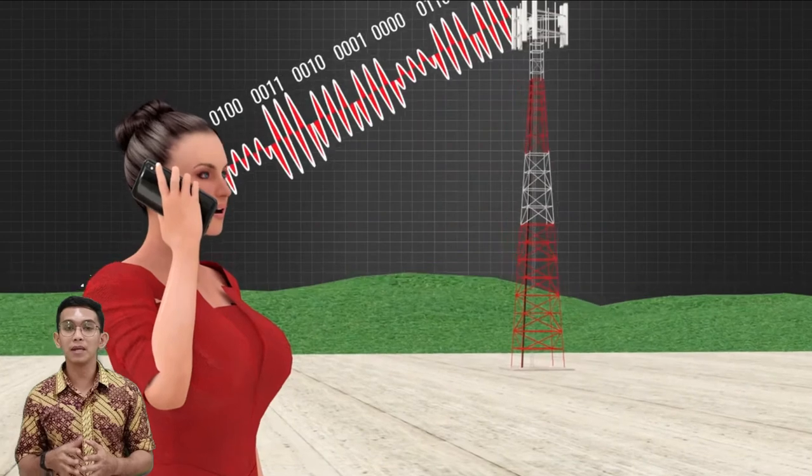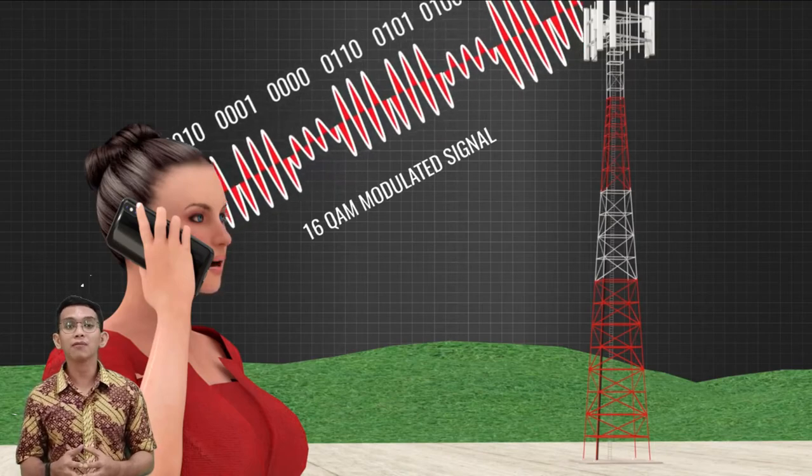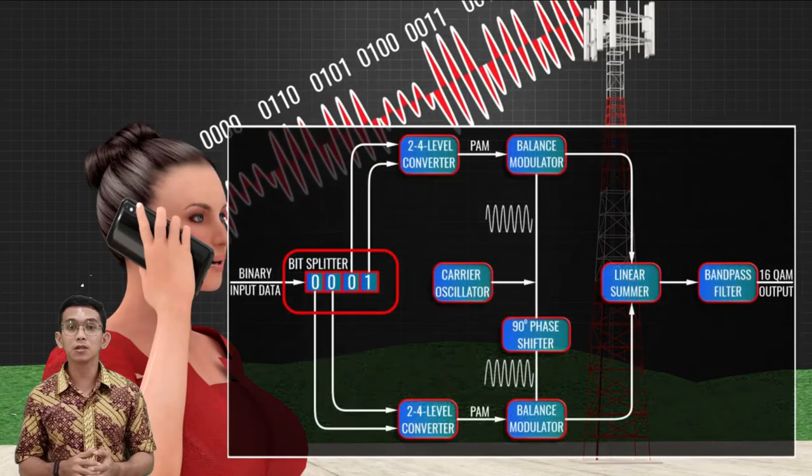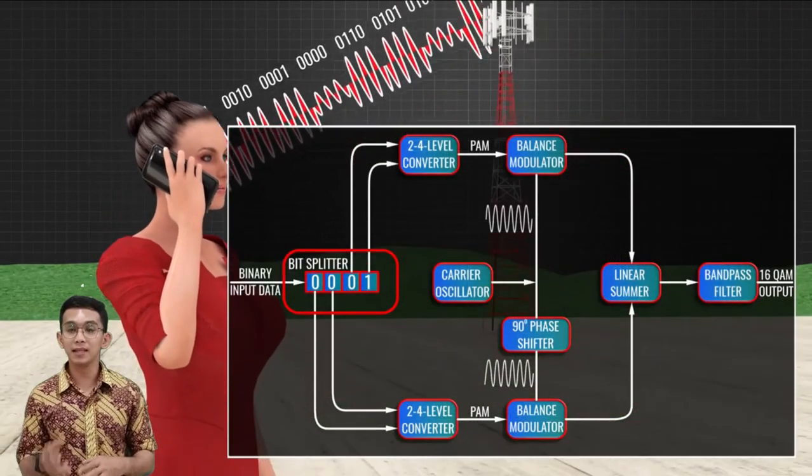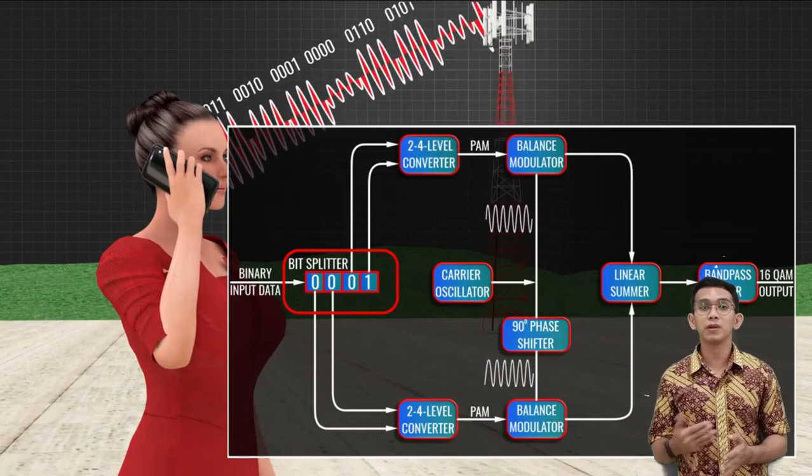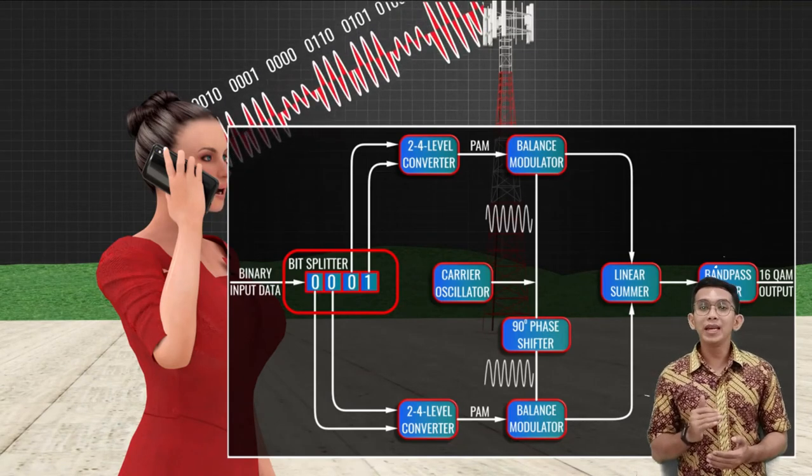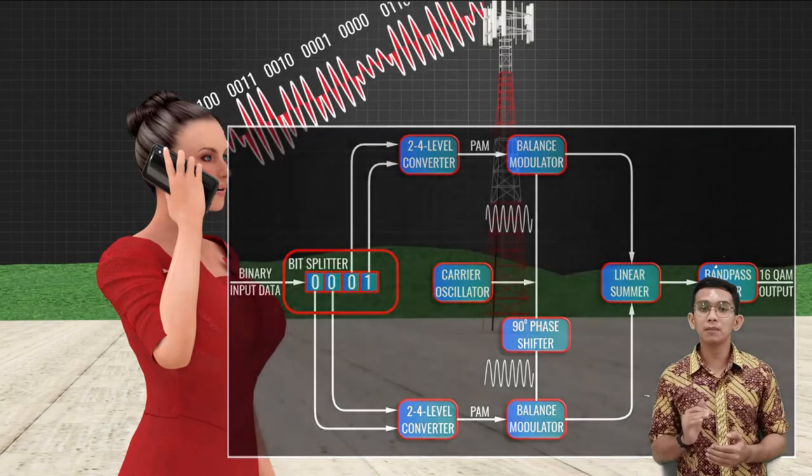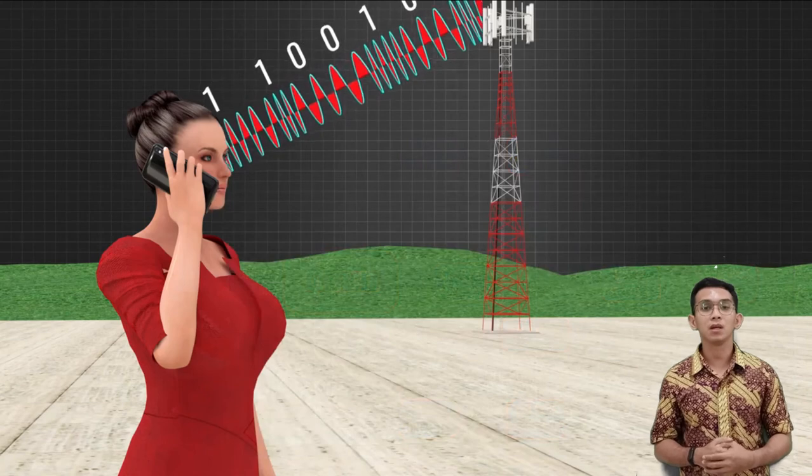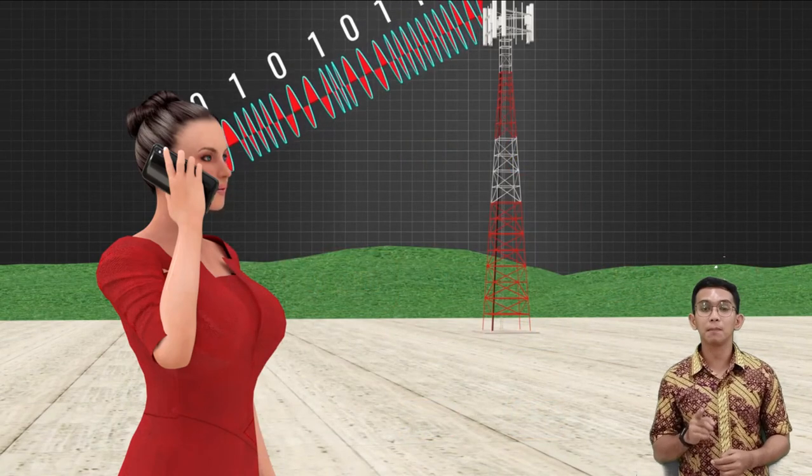Using similar techniques to that used in analog modulation, the amplitude modulated signals are mixed together and finally a single output is produced. As we've seen, in this modulation two carrier signals that are out of phase by 90 degrees are used, hence the word quadrature is used to refer to this technique. If instead of QAM we had used a normal modulation technique to send bits of data, we would have used four electromagnetic signals. Thus, 16-QAM increases the data transfer speed by four times.